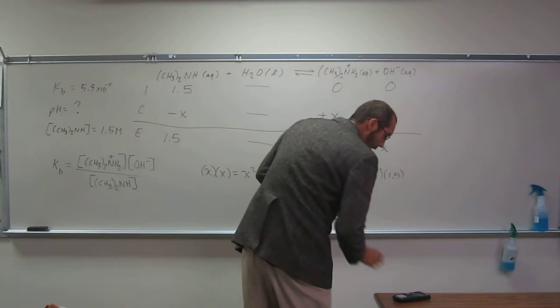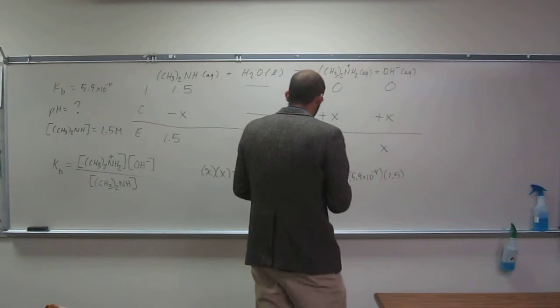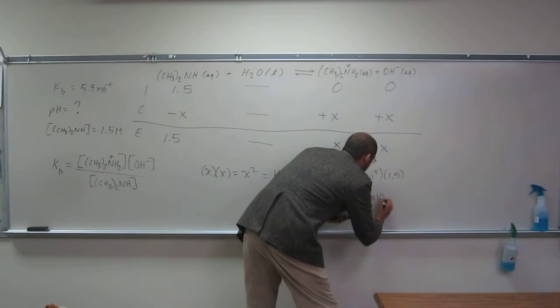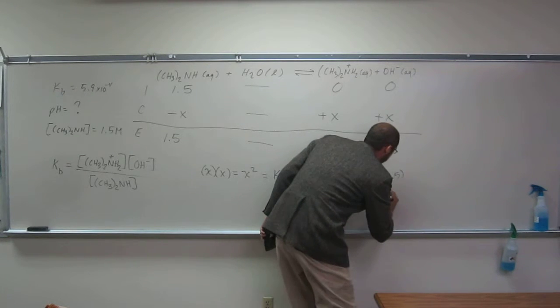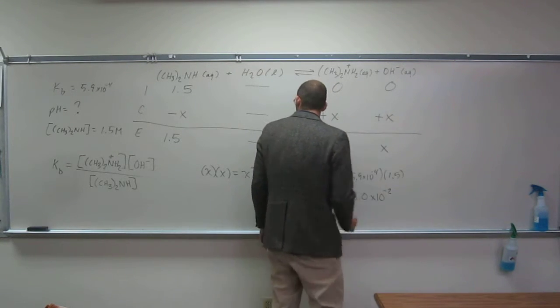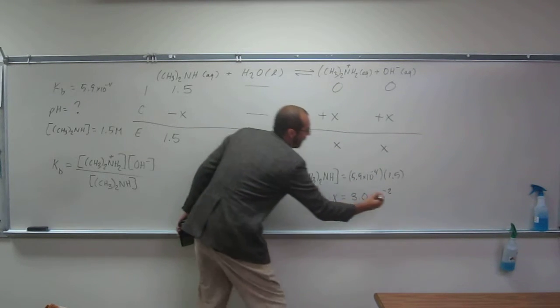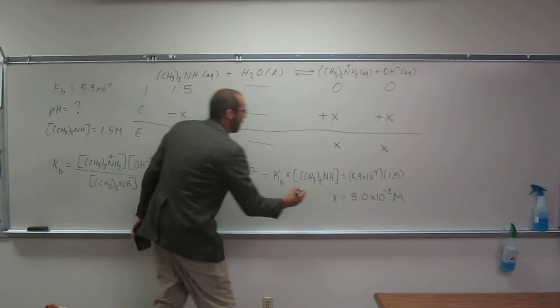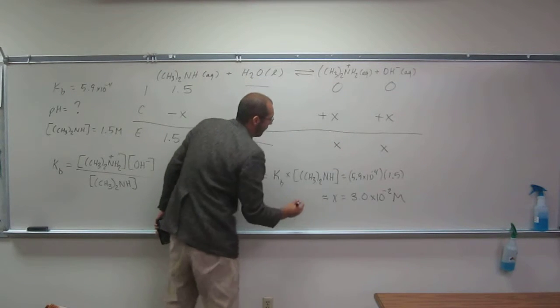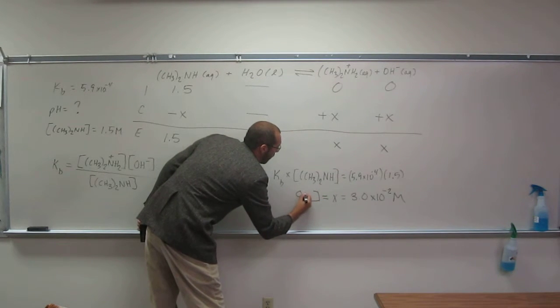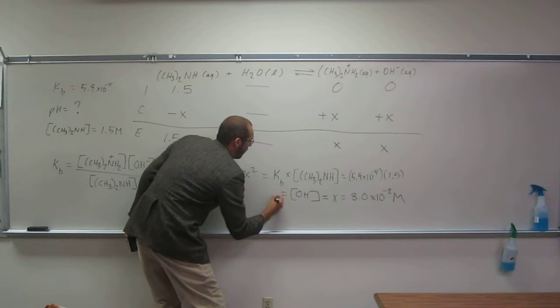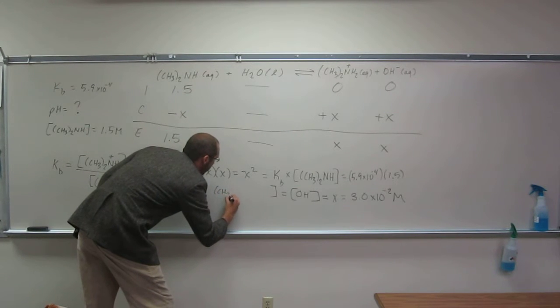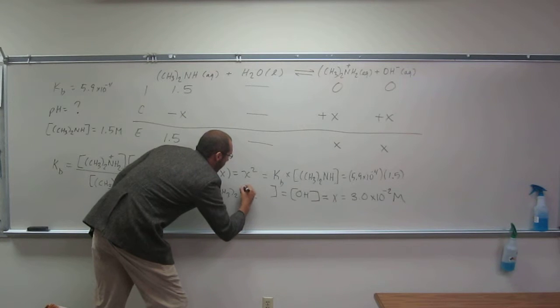Okay, so I get 3.0 times 10 to the negative 2 for x, and that's molarity, right? So remember, x is going to equal this and this, so it equals the concentration of OH minus, and also the concentration of the protonated dimethylamine.